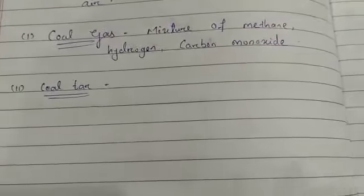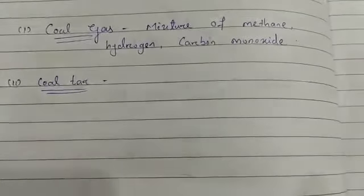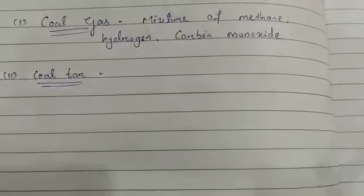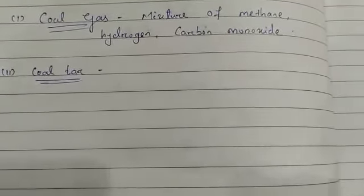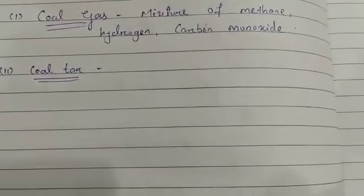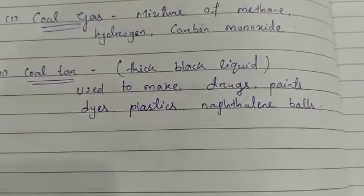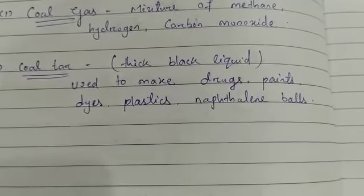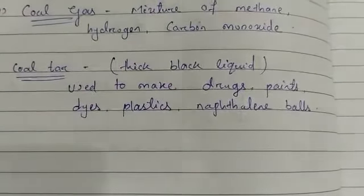Coal tar is a thick black liquid obtained by destructive distillation of coal. It contains about 200 different compounds, which are separated chemically and used to make important substances like drugs, dyes, plastics, roofing materials, and naphthalene balls. Naphthalene balls are used to protect clothes from moths and insects. Earlier, coal tar was also used to cover roads, but these days metaling of roads is done using bitumen obtained from petroleum.